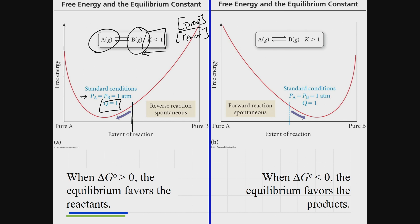If it's going to proceed to the left, it's proceeding where delta G is greater than zero. If you start under standard state conditions and the reaction proceeds to the left, that's what happens when delta G is greater than zero. It will shift to some minimum and reach equilibrium. Whenever K is less than 1, it favors going left; whenever delta G is greater than zero, it also favors going left.